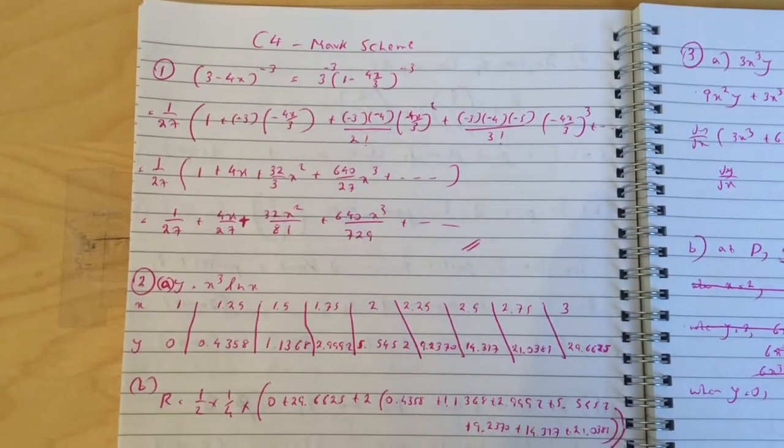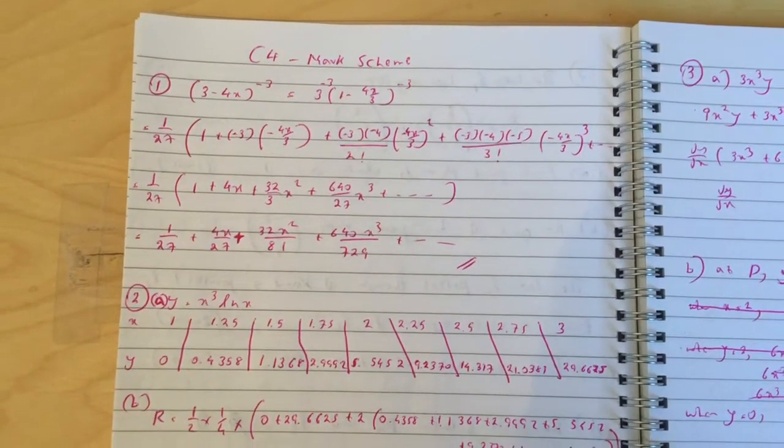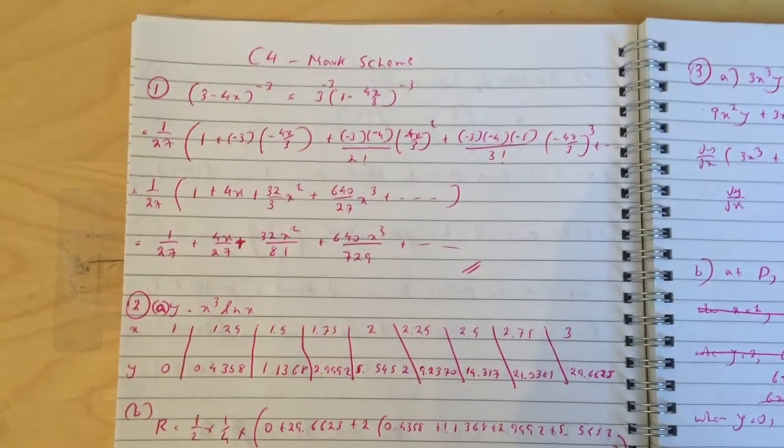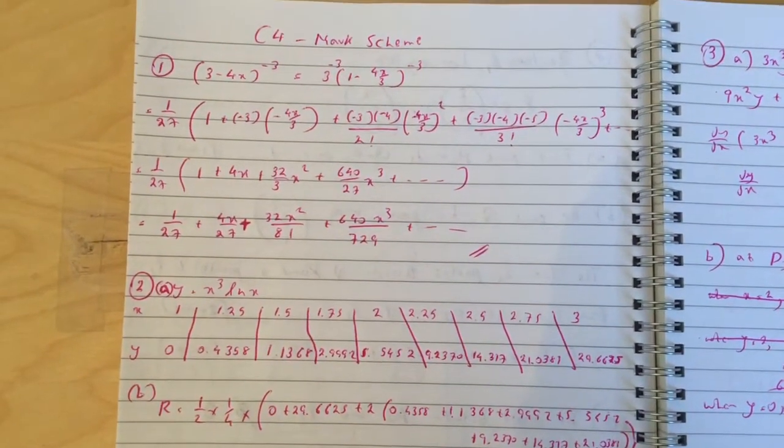Okay guys, these are the solutions. The first question is the binomial expansion. What I did is I took the 3 out so it goes at 3 to the minus 3, so it's 1 over 27. Then the usual expansion really, I'm not going to read it out, you can pause the video and go through each step.